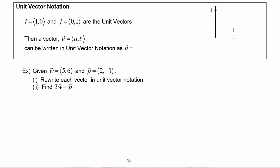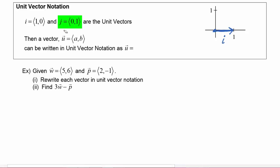Vectors can also be written in what's called unit vector notation, where i is the vector (1, 0) — it starts at the origin and goes out to the point (1, 0). Vector j is the vector (0, 1), meaning it starts at the origin and goes to the point (0, 1).